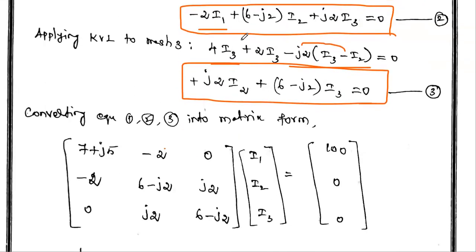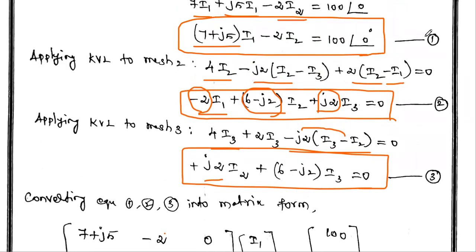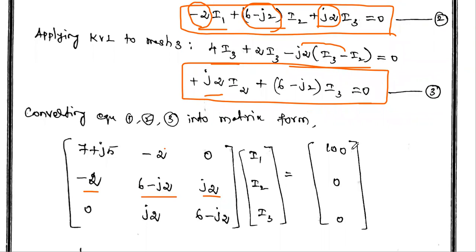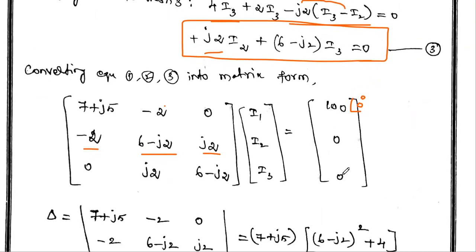In the second equation, the coefficient for i1 is -2, for i2 is (6 - j2), and for i3 is +j2. In the third equation, the coefficient for i1 is 0, for i2 is (6 - j2), and for i3 can be read from the third row. The constant values are: 100∠0° (which equals 100 + j0, simply written as 100) for the first equation, and 0 for the second and third equations.